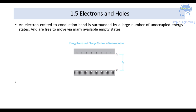An electron excited to the conduction band is surrounded by a large number of unoccupied energy states and is free to move via many available empty states. The energy band and the charge carriers in the semiconductor are shown here. Electrons in the valence band excite to the conduction band, and the white spaces visible in the diagram represent the empty or unoccupied states — the holes — while electrons occupy the conduction band and are free to move because of the available empty space.